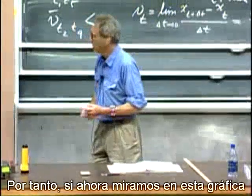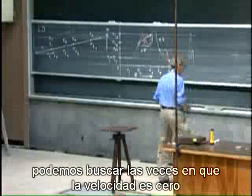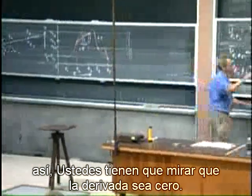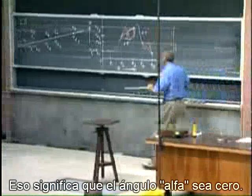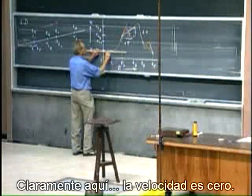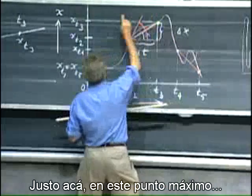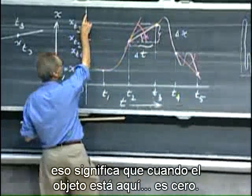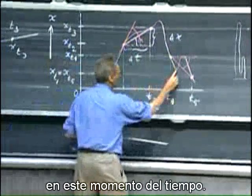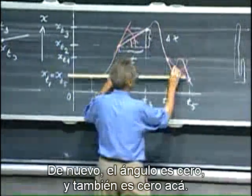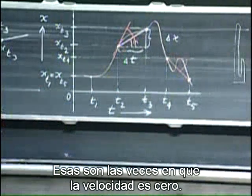So if we now look at this plot, we can search for the times that the velocity is zero. So you have to look for the derivative being zero. That means the angle alpha being zero. Clearly here, the velocity is zero. Right here at this turning point, that means when the object is here, it is zero. When the object is here, it is again zero at this moment in time. Again, the angle is zero. And it is again zero here. So those are the times that the velocity is zero.